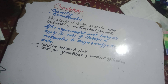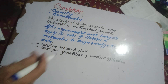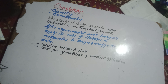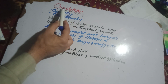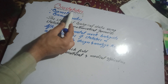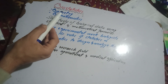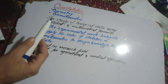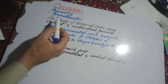Biostatistics is the correlation of biology and statistics. Statistics is a branch of mathematics. The use of statistical and mathematical formulas in biology is called biostatistics. Biostatistics is also known as biometrics and bio-mathematics.